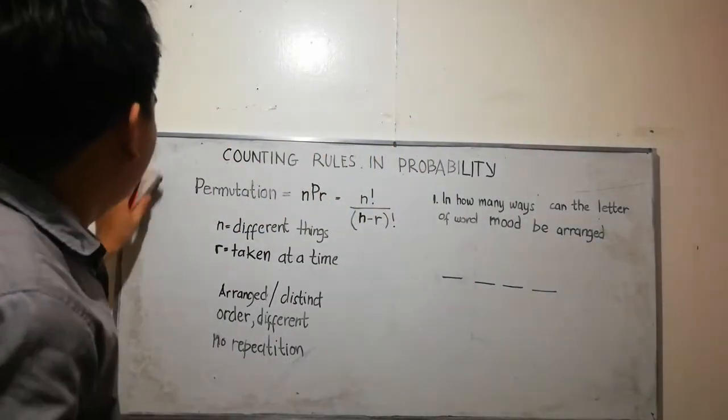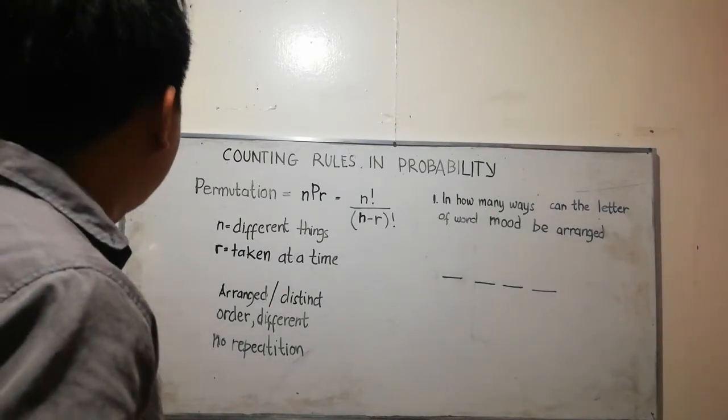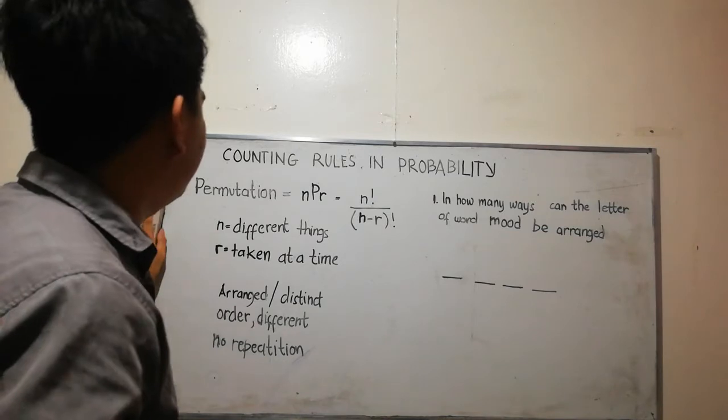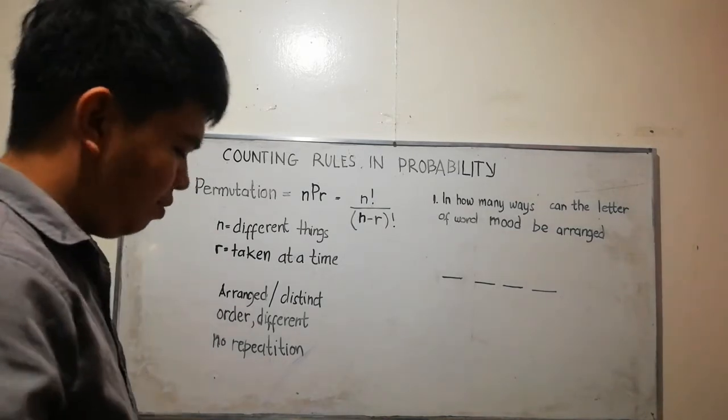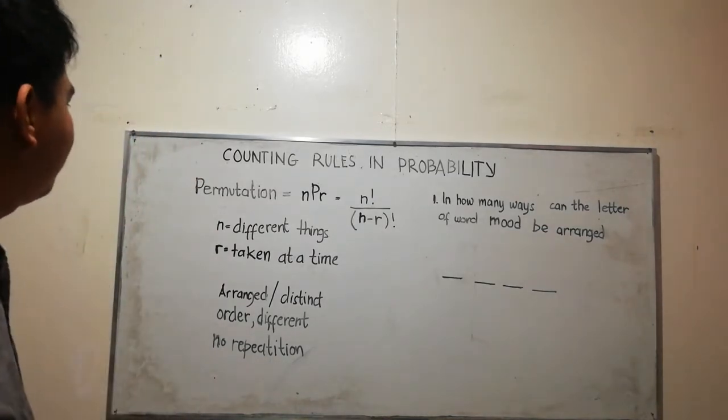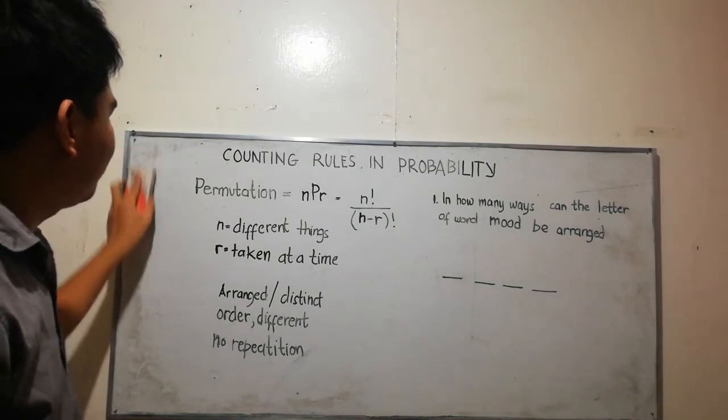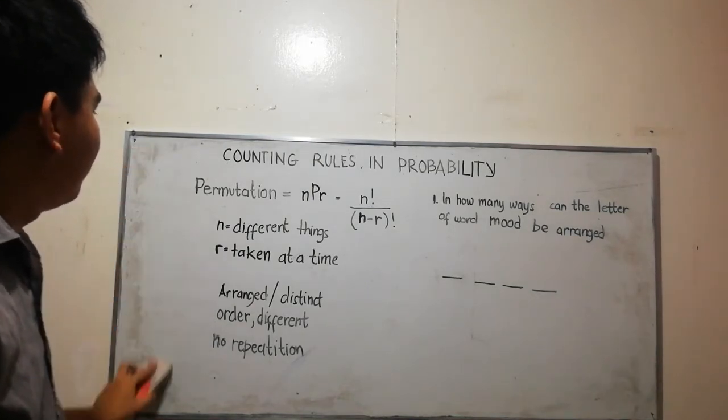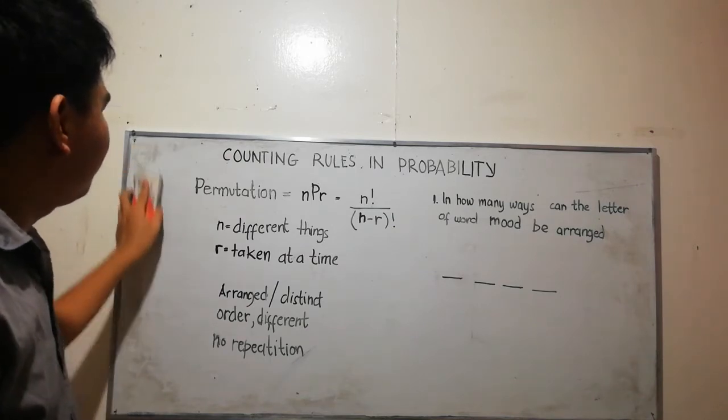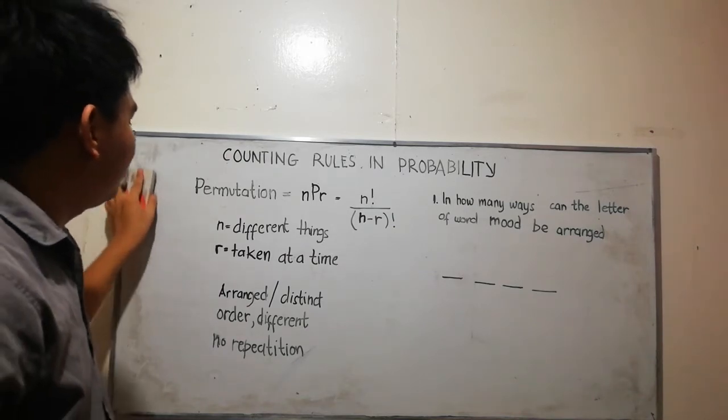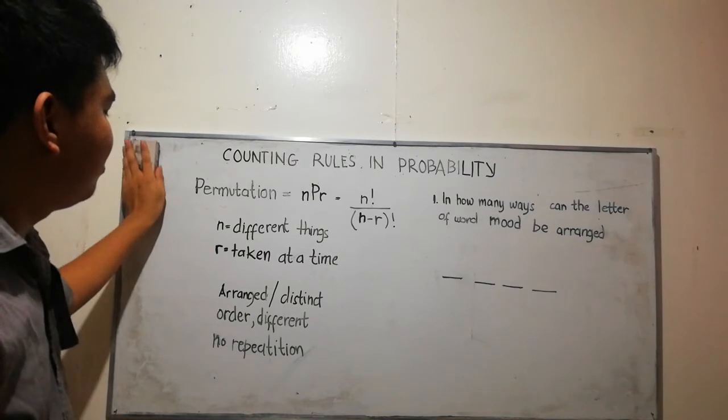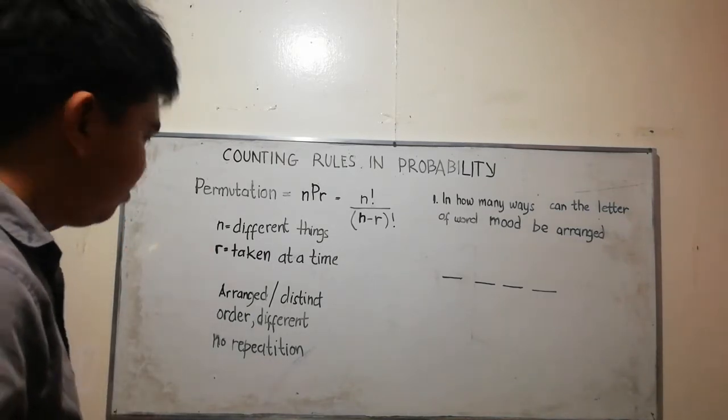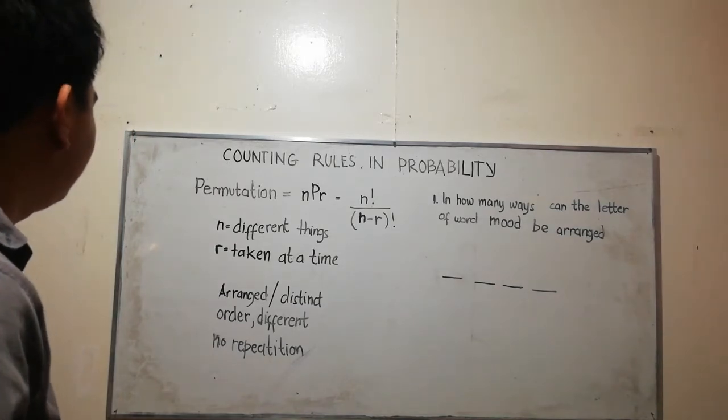Good morning class. This is the continuation in counting rules in probability day two. We have another rule which is permutation. Permutation is an arrangement of different things.